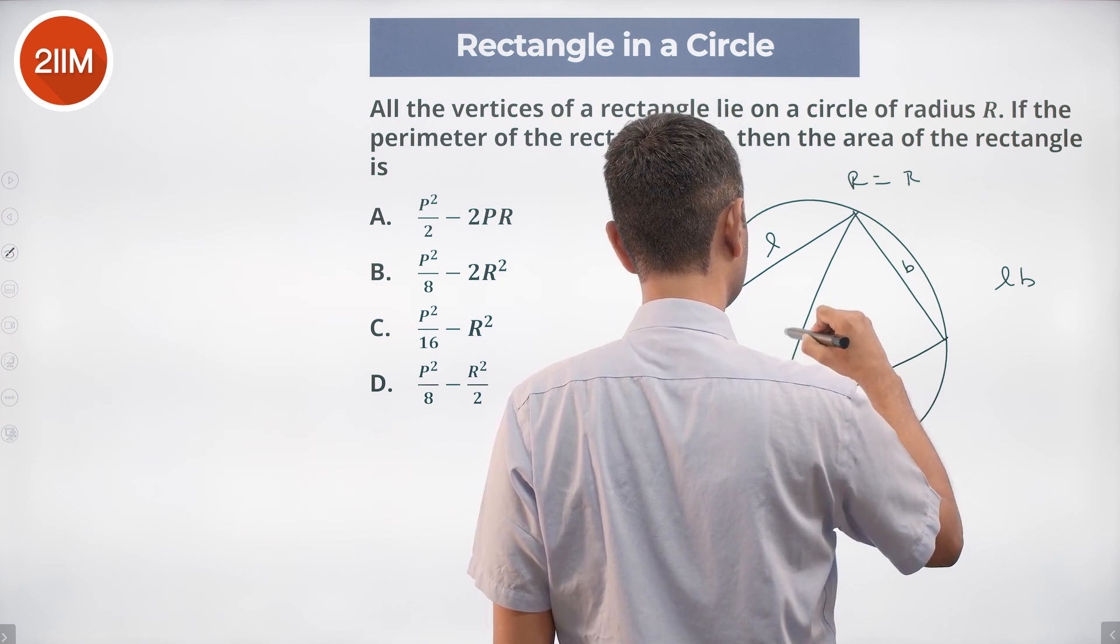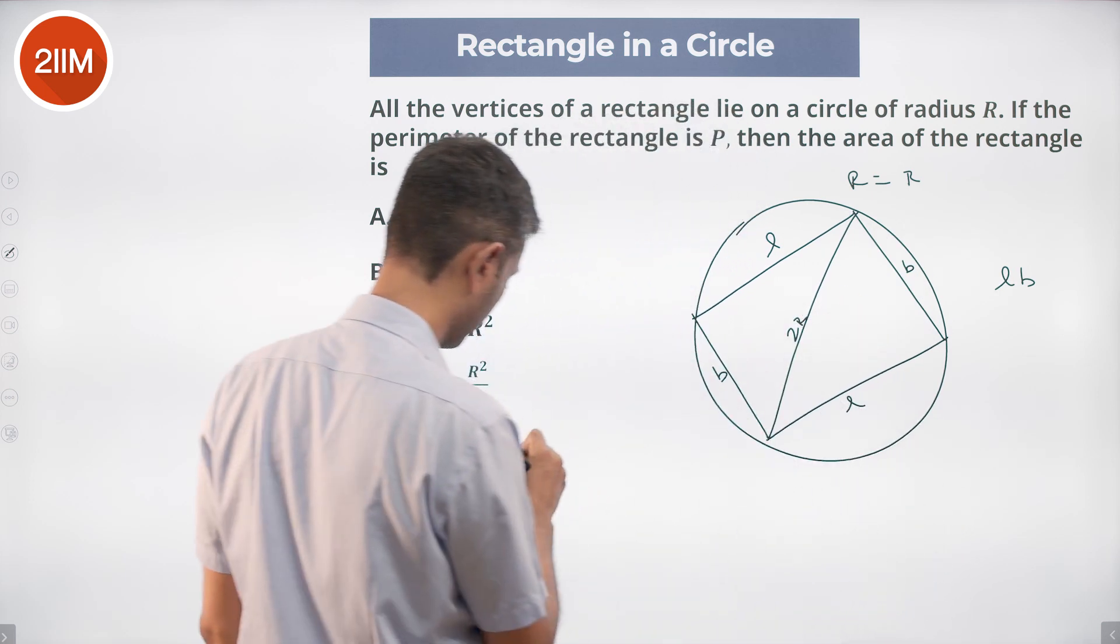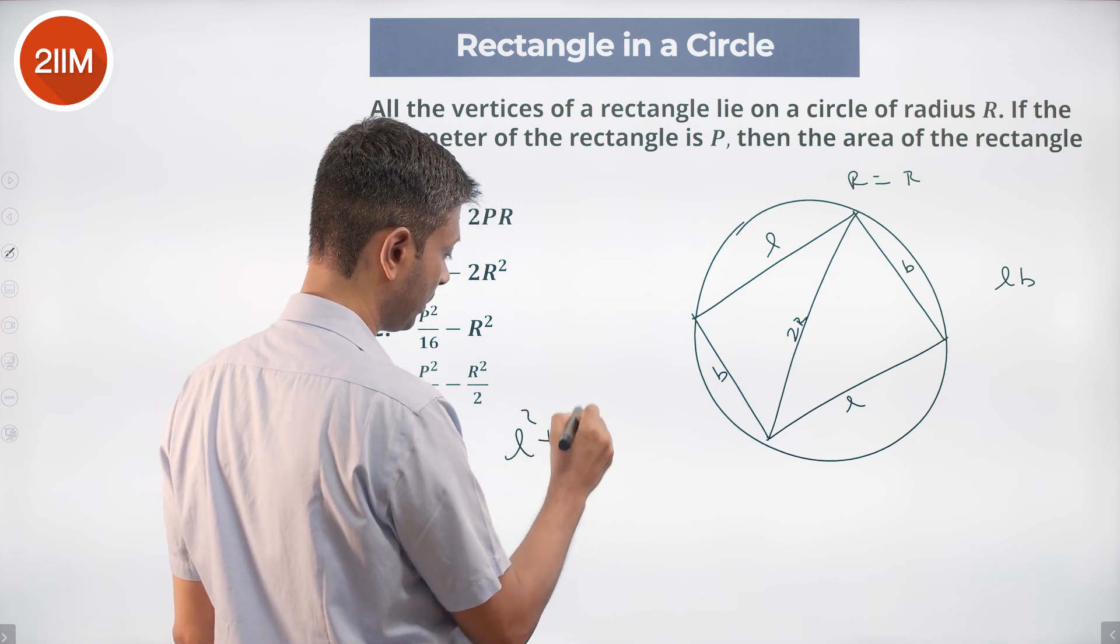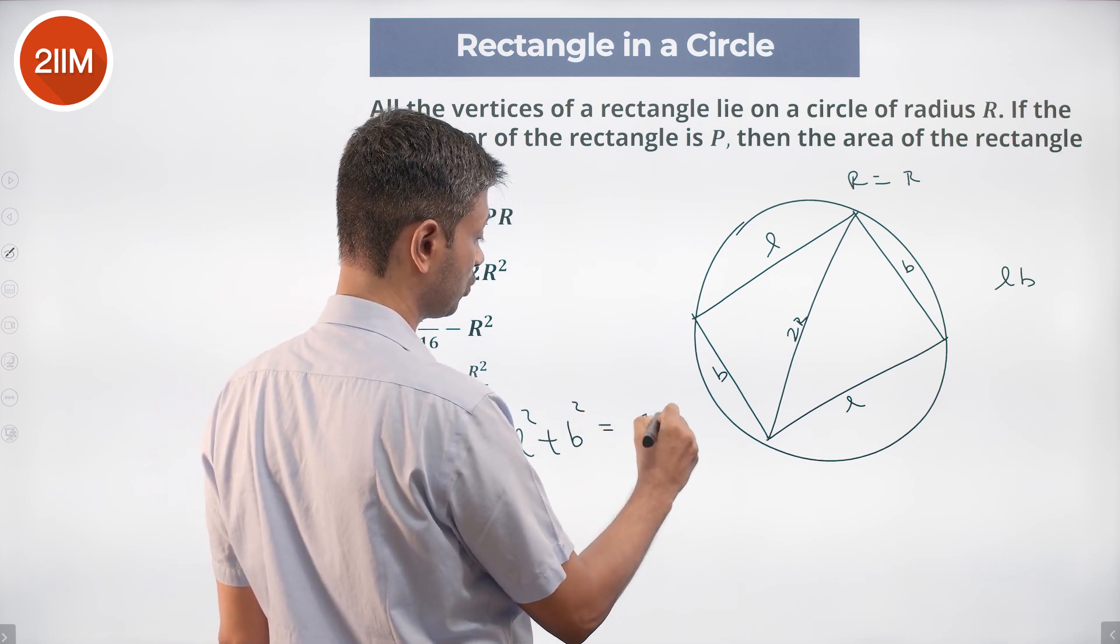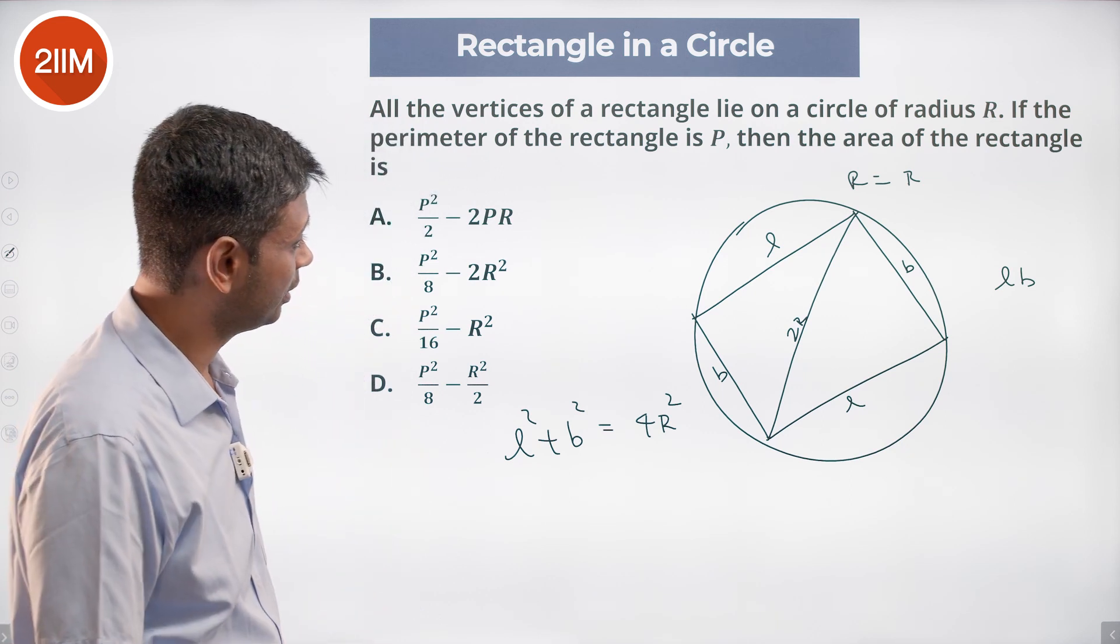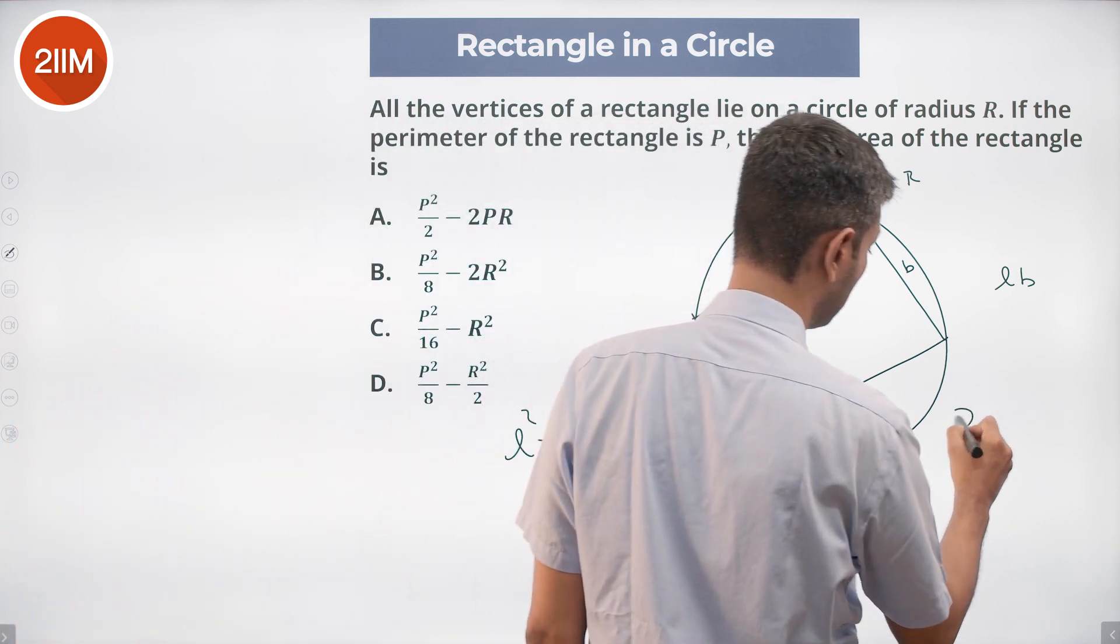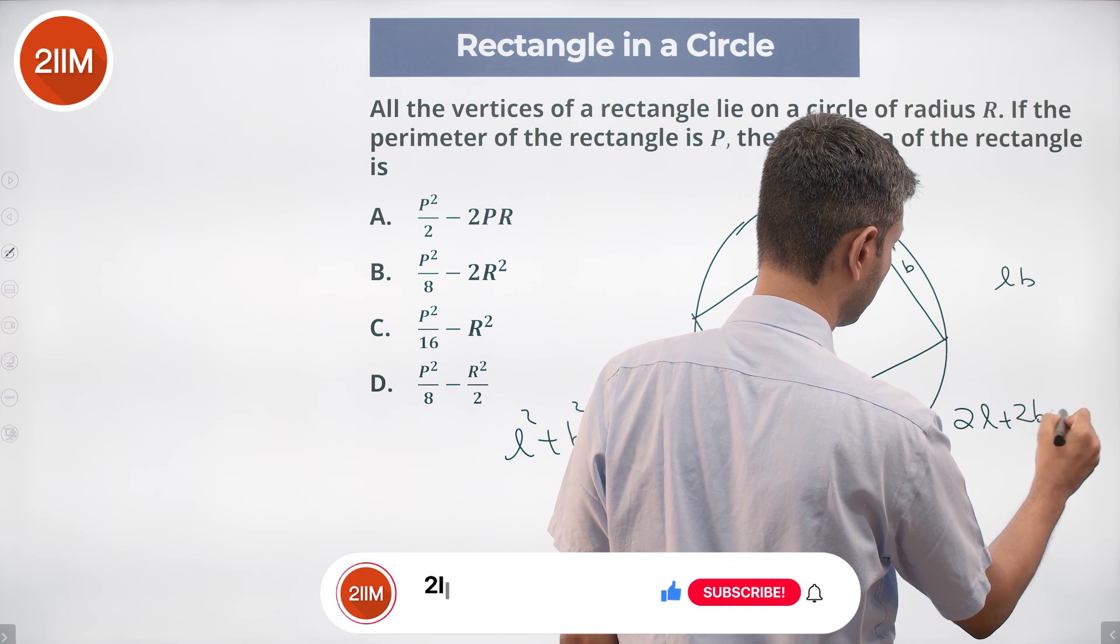L square plus B square, this is 2R. So L square plus B square equals 4R square. We know 2L plus 2B is equal to P.